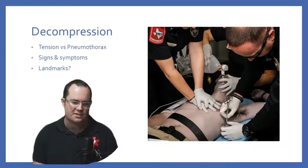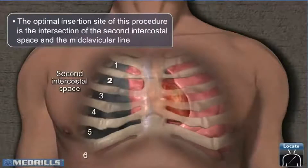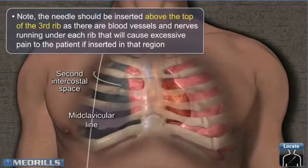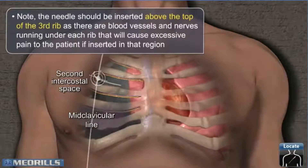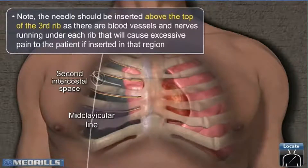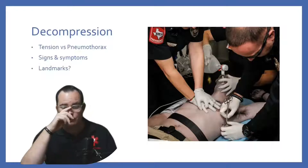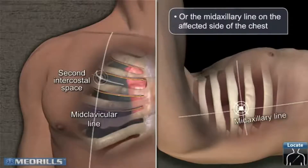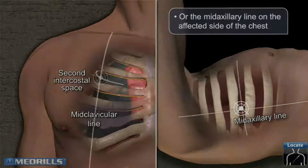Know your landmarks: the second or third intercostal space at the midclavicular line. Remember, we always go above ribs, never below, because there are nerve endings and blood vessels there — always up and over. If going mid-axillary, like shown in the photo, it's the fourth and fifth intercostal space. Mid-axillary is becoming more common.